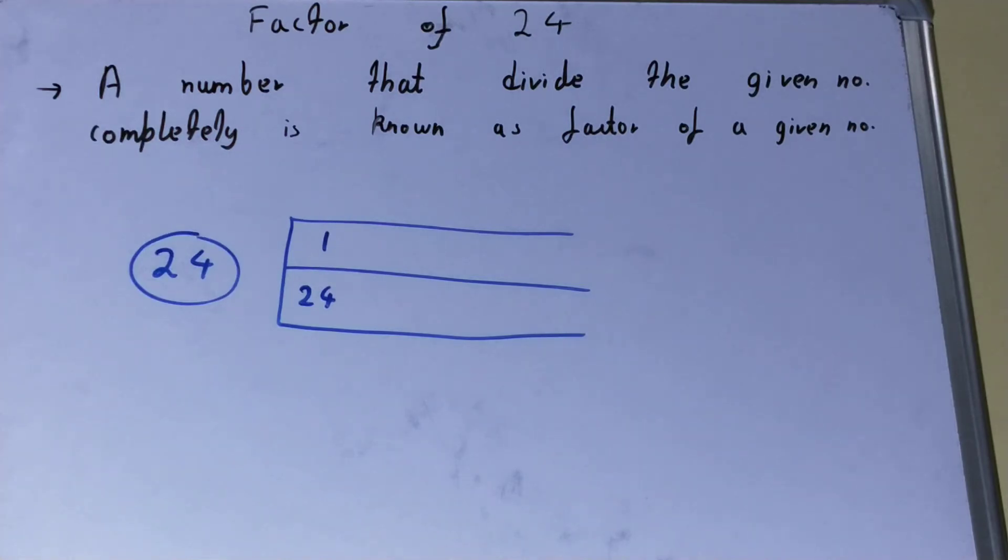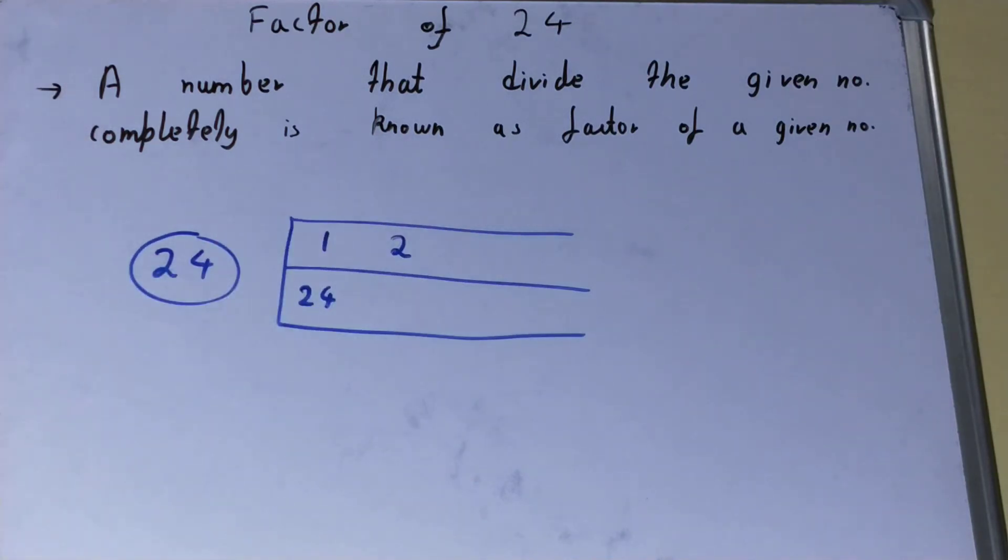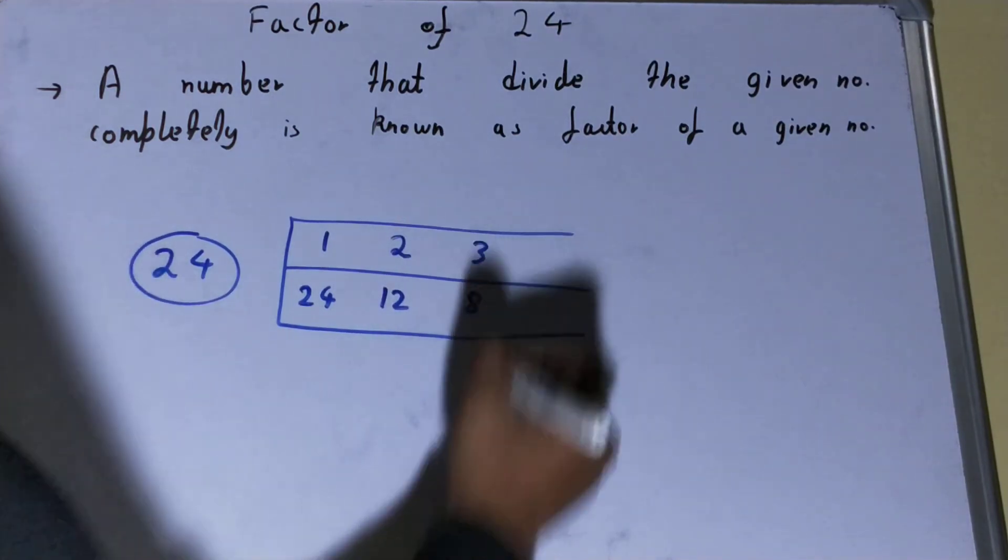Next, you go on increasing from number 2. Is 2 a factor of 24? Yes, 2 into 12 goes to 24. Is 3 a factor of 24? Yes, 3 into 8 goes to 24. Is 4 a factor of 24? Yes, 4 into 6 goes to 24.